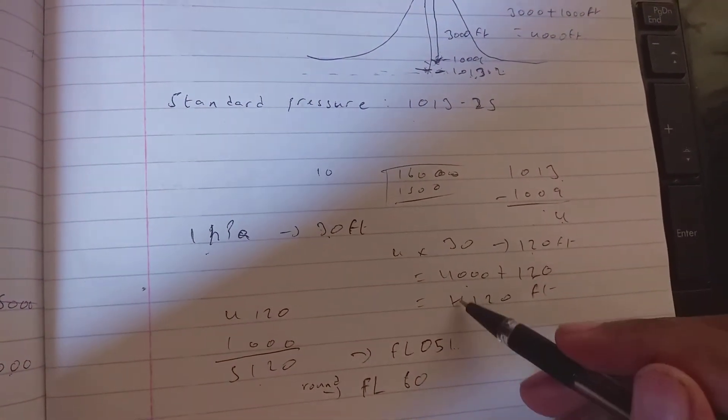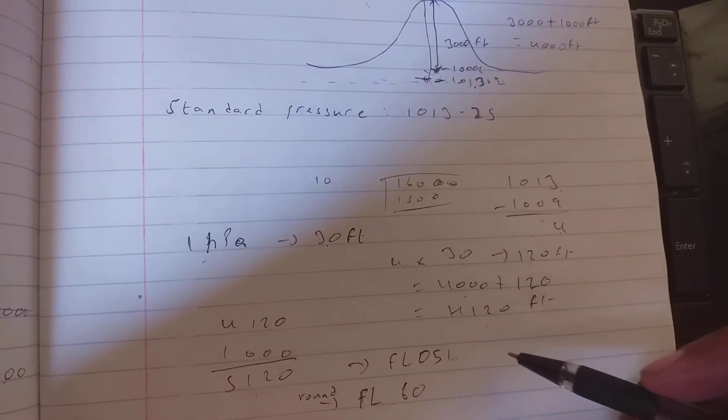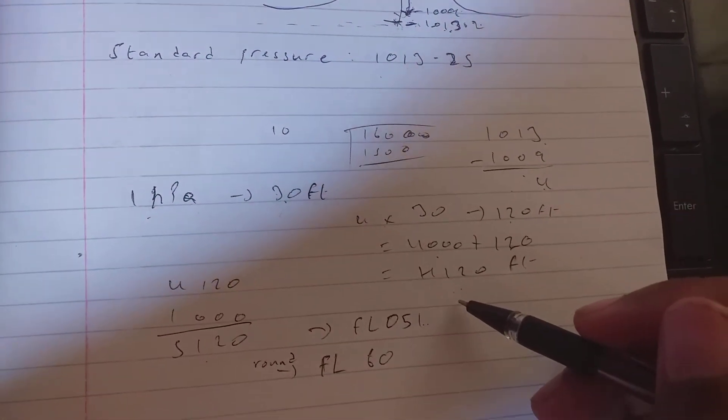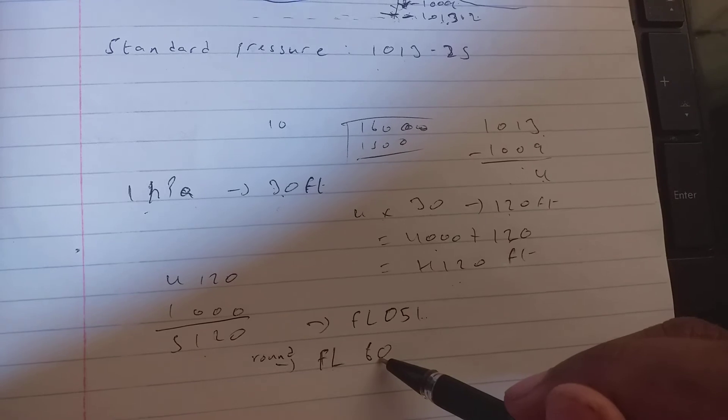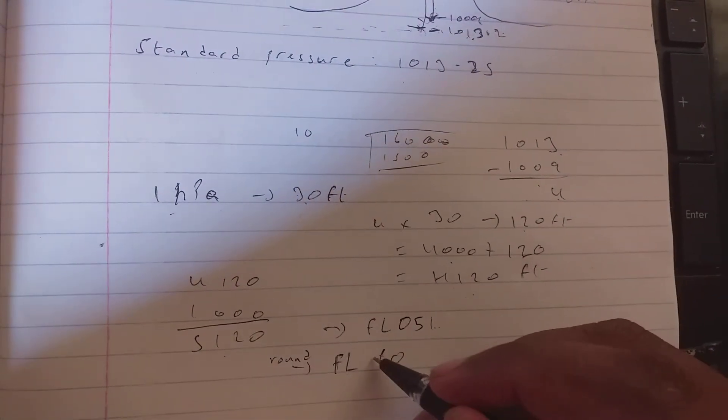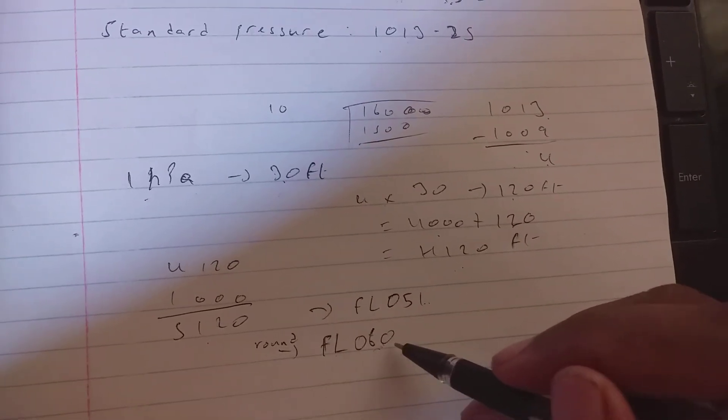We cannot round it down because it could hit something or it is not actually at the transition altitude. So we always round it up. The transition level would be 60, flight level 60.